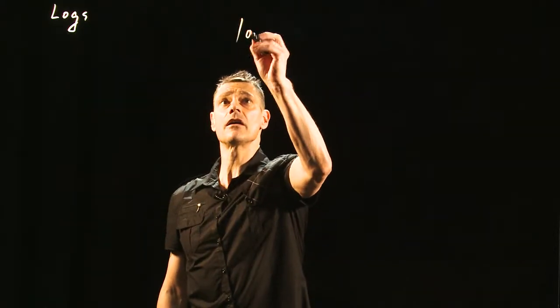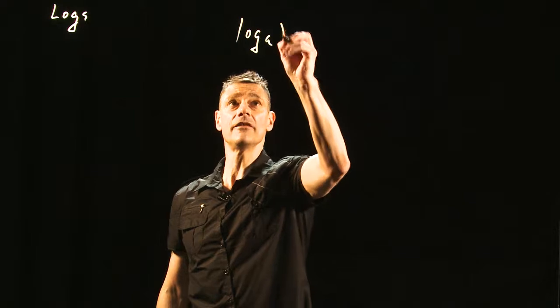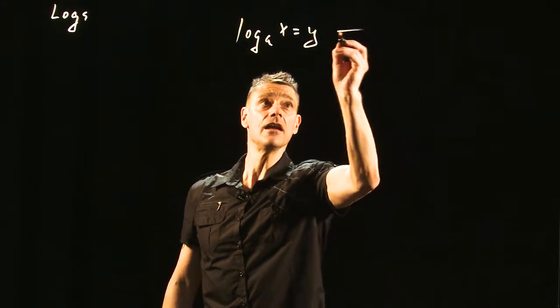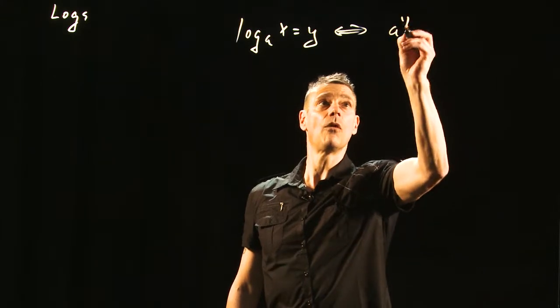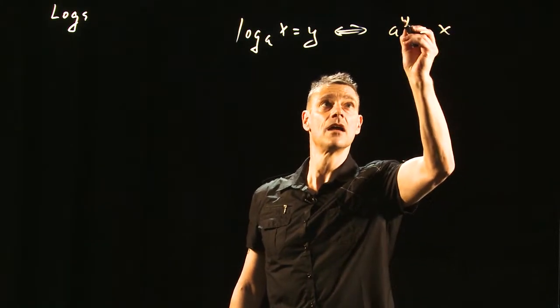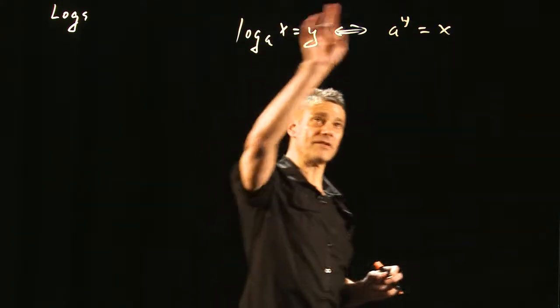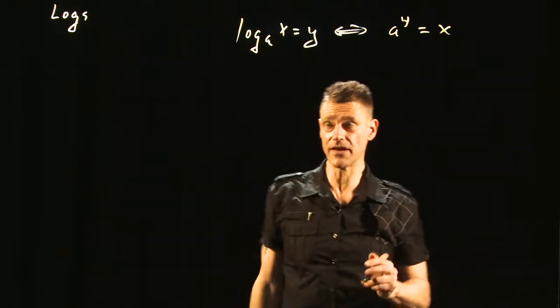We say that the log base a of x equals y if and only if a to the y is equal to x. This is called the logarithmic form, this is called the exponential form, they say the exact same thing.